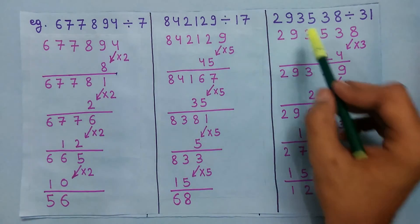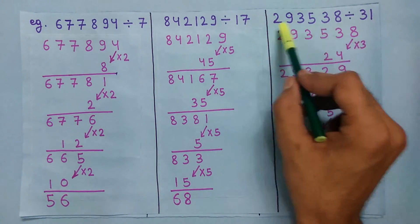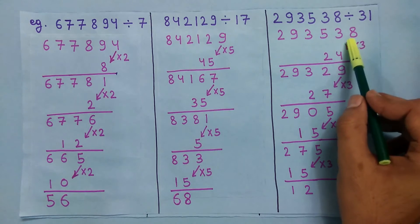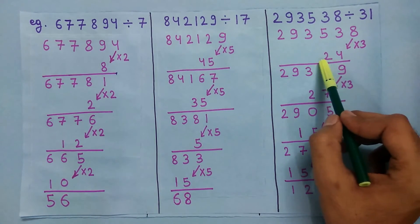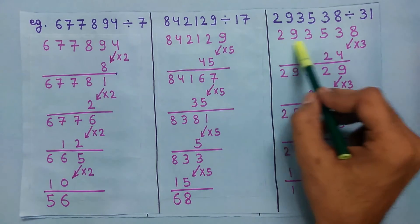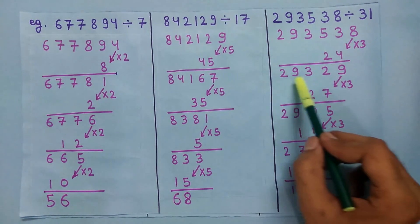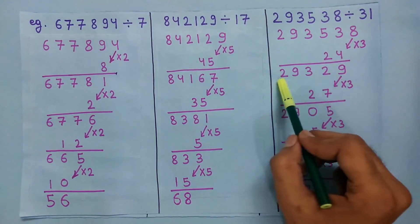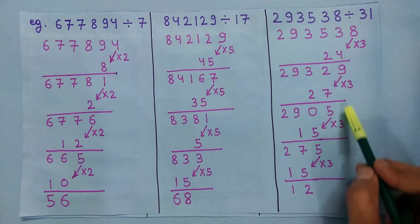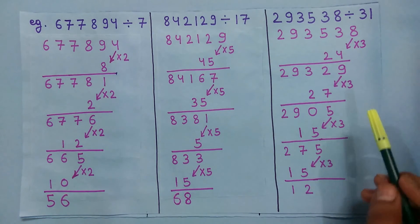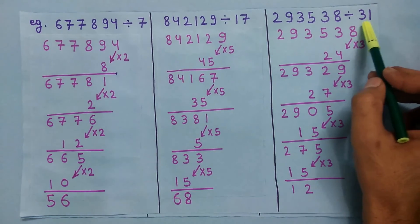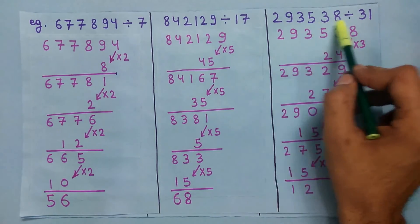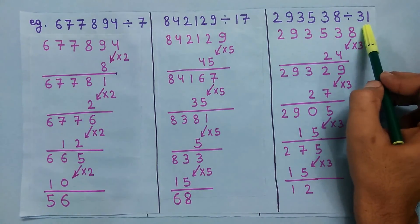To check if this number is divisible by 31 or not, multiply the last digit by 3 and we get 24. Now subtract this 24 from the remaining number and we get this number. Repeat the process until we get a small number. In this case the small number is 12. Now 12 is not divisible by 31, so this number is also not divisible by 31.